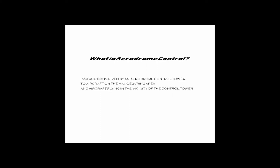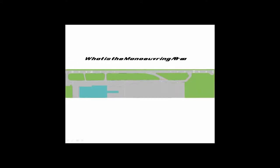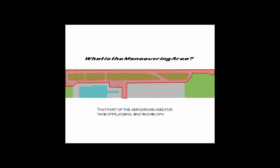A term we may not be used to is 'maneuvering area,' and another term we might not be familiar with is 'in the vicinity of the control tower.' Let's go ahead and define what a maneuvering area is. The maneuvering area is defined as that part of the airdrome used for takeoff, landing, and taxiing of aircraft, excluding aprons.